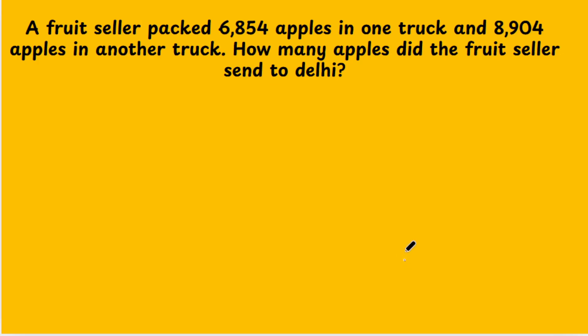Let's see one more example. We need to analyze the story. A fruit seller packed 6,854 apples in one truck and 8,904 apples in another truck. So one truck is filled with 6,854 apples and another truck is filled with 8,904 apples. There are two trucks. What they are asking is: how many apples did the fruit seller send to Delhi? The story is about a fruit seller.